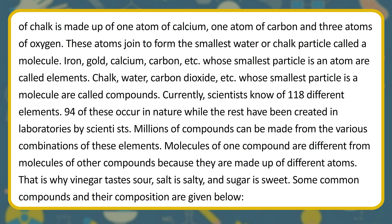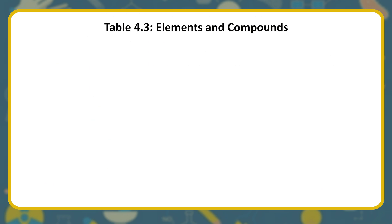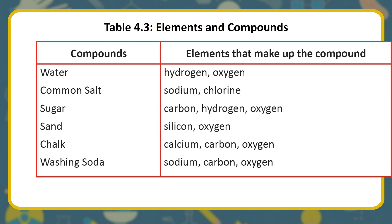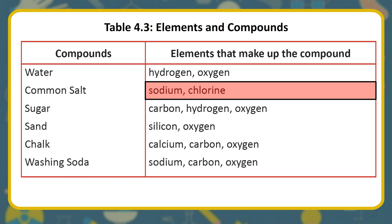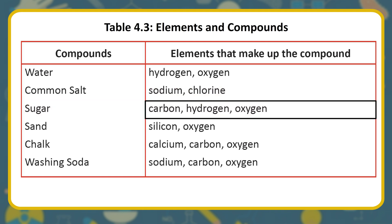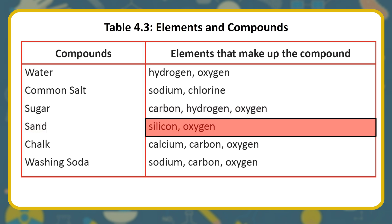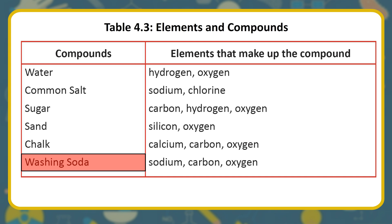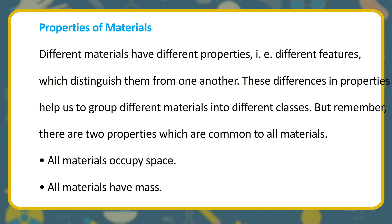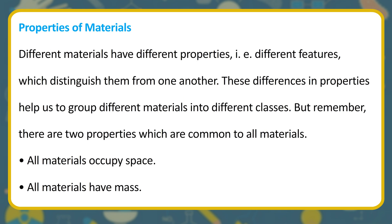Molecules of one compound are different from molecules of other compounds because they are made up of different atoms. That is why vinegar tastes sour, salt is salty, and sugar is sweet. Some common compounds and their composition are given in Table 4.3 — Elements and Compounds — listing water, common salt, sugar, sand, chalk, and washing soda along with the elements that make them up.